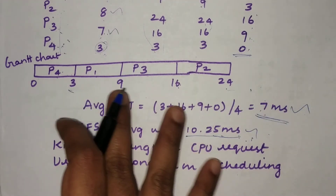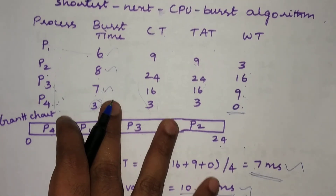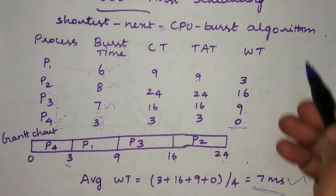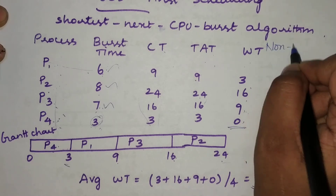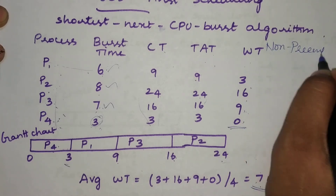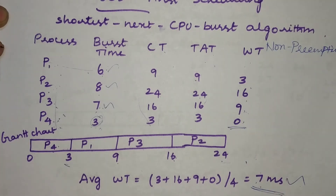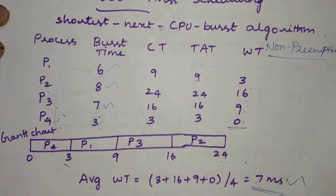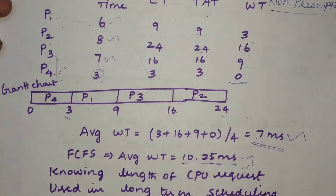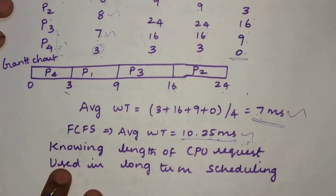The example we solved used the non-preemptive version of SJF — similar to FCFS which is also non-preemptive. However, SJF is not limited to non-preemptive operation; it can also work in preemptive mode. We will discuss preemptive Shortest Job First scheduling as well.